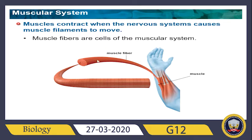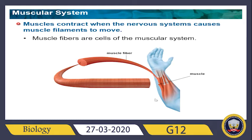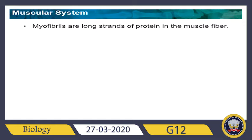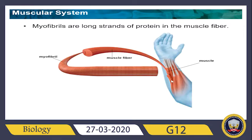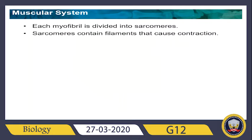The myofibril is the basic unit of the muscle. So this is the muscle — we zoom in and find muscle fiber, then zoom in further and find myofibers. Myofibers are long strands of protein in the muscle fiber. So: muscle → muscle fiber → myofibril — the myofibril is long strands of protein in the muscle fiber.